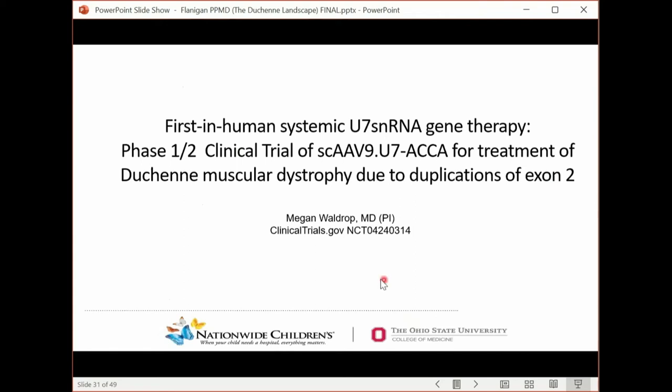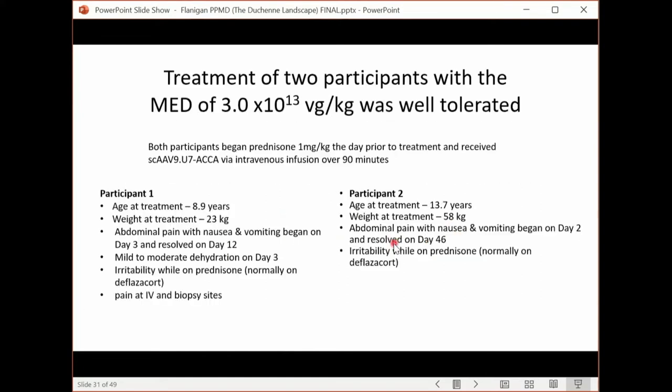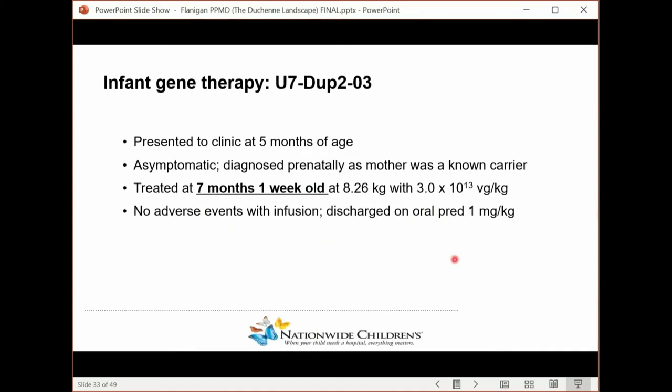And that led to this first in-human trial, led by my colleague, Dr. Waldrop, because I have a royalty interest in this approach. In this trial, the first two patients were enrolled at the request of the FDA above eight years of age. An 8.9-year-old boy of about 23 kilograms who tolerated the infusion quite well. And the second boy was about 13.7 years of age at 58 kilograms. He tolerated the infusion quite well as well. We only had enough virus left for an infant. And in fact, an infant showed up at seven months of age. He also tolerated it very well. So he's the youngest patient, to my knowledge, that's treated systemically with a vector for Duchenne muscular dystrophy.